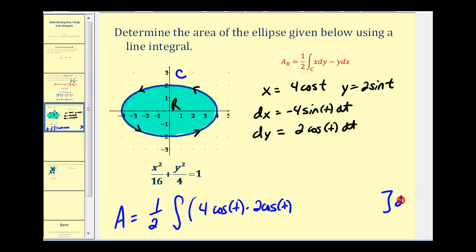I'm going to go ahead and put the dt out here. Minus y, which is two sine t times dx, which is negative four sine t. And our limits of integration in terms of t would be from zero all the way to two pi.